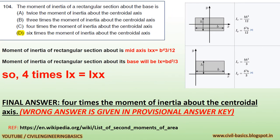Question: The moment of inertia of a rectangular section about the base is: a) twice, b) three times, c) four times, d) six times the moment of inertia about the centroidal axis. As you can see in the diagram on the right-hand side, moment of inertia of a rectangular section about its mid-axis XX equals bd³/12, and about its base equals bd³/3. So the base moment is 4 times the centroidal moment. Final answer: 4 times. A wrong answer is given in the provisional answer key.